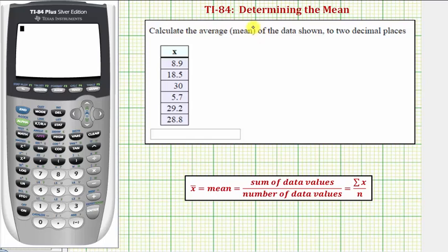Welcome to an example on how to calculate the average or mean of a data set using the one variable statistics tool on the TI-84. For this example, we're asked to find the average or mean of the data set to two decimal places.